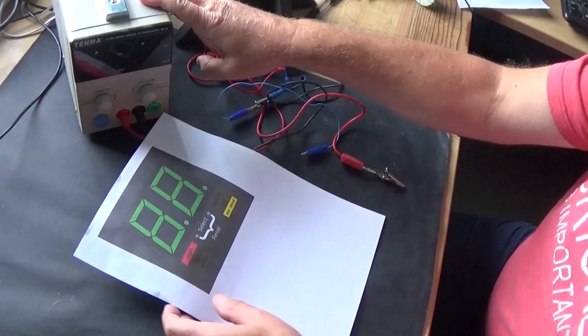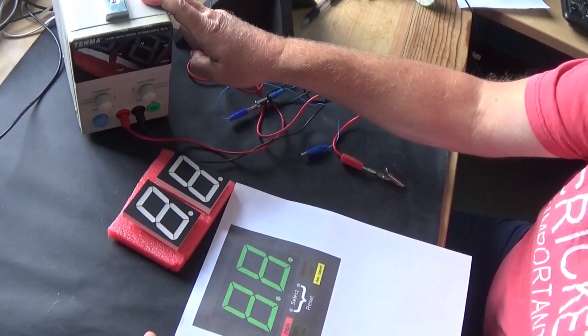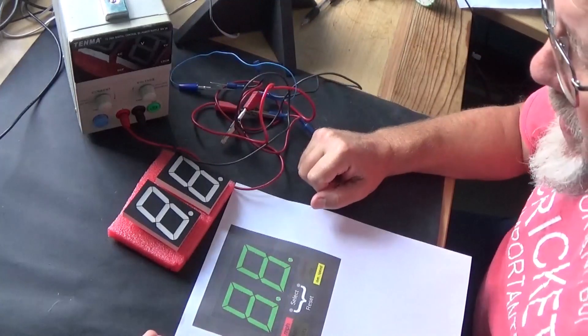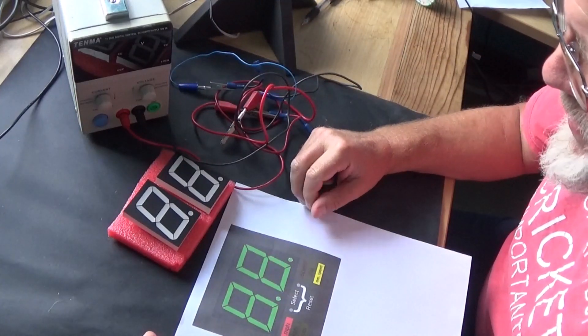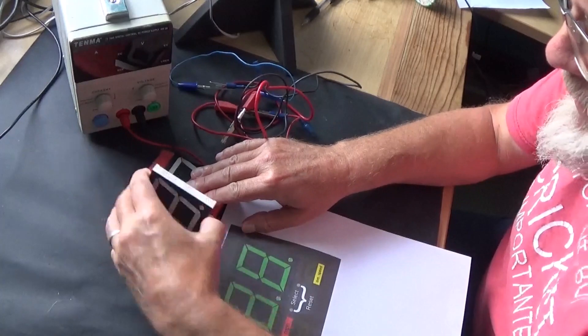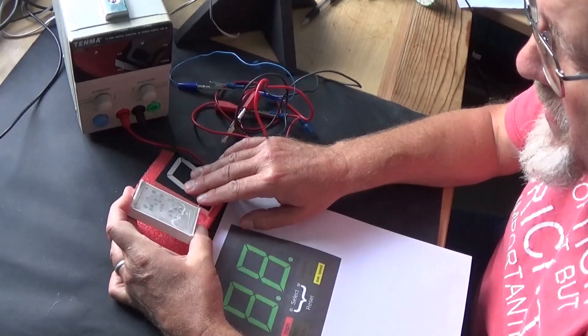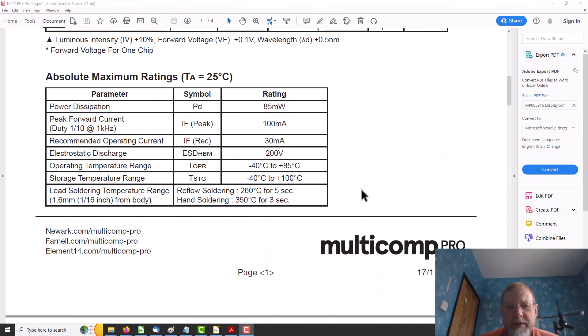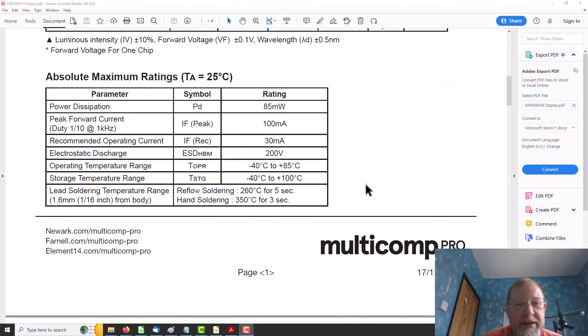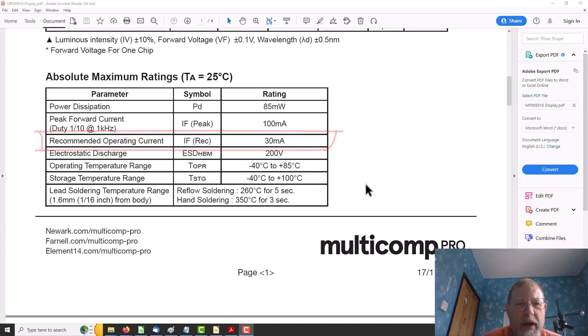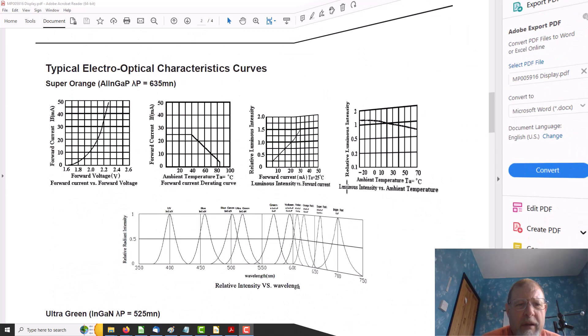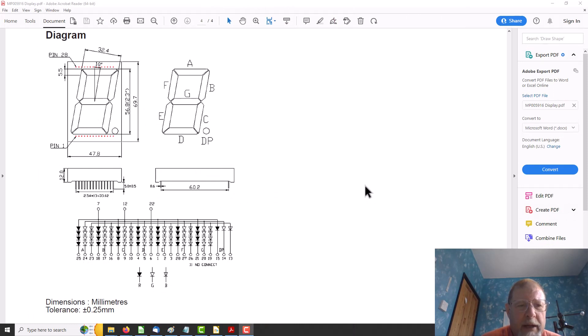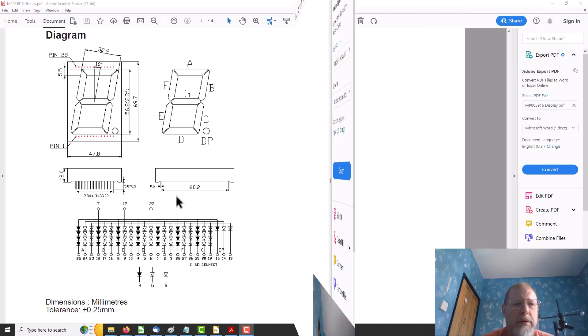We have here the trusty Tenma Superdim power supply and some spaghetti. So I'm going to dial up the datasheet and we're going to try and fire one of these up. You can see it's a Multicomp Pro, it's not actually branded. Here it says recommended operating current, 30 milliamps. We will give it 30 milliamps. And here we have the pinout, which I am going to waste some paper and print out.